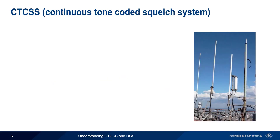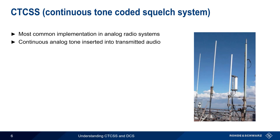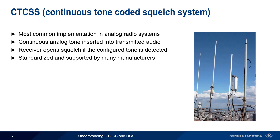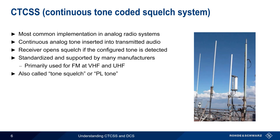The first type of user squelch we'll discuss is called CTCSS, or Continuous Tone Coded Squelch System. This is the most common implementation of user squelch in analog radio systems. CTCSS works by inserting a continuous analog tone into the transmitted audio, and the receiver will only open squelch if the configured tone is detected in the received signal. CTCSS is standardized and supported by many manufacturers, and is primarily used in FM at VHF or UHF frequencies, although it could be used for other bands or modulation types. You may also hear CTCSS referred to as Tone Squelch, or PL Tone — PL standing for private line, a term trademarked by Motorola.